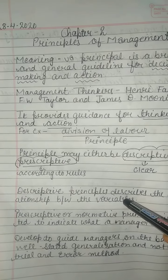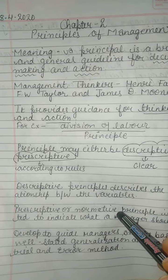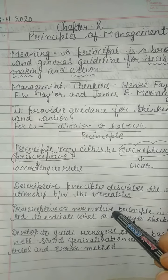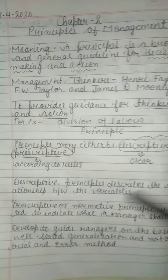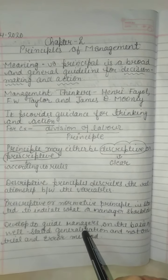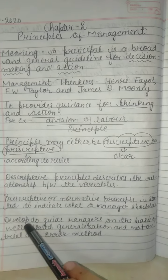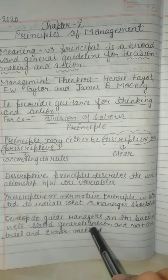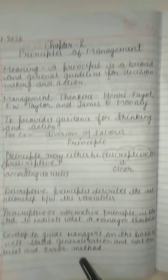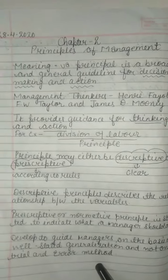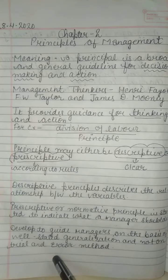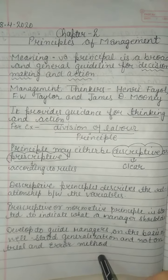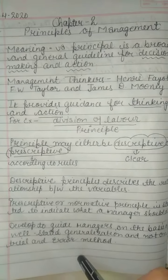Prescriptive or normative principles are developed to guide the manager in taking decisions on the basis of well-stated generalization, not on a trial and error method. Managers can estimate in advance what will happen in a situation. For the school fair example, the task is divided into smaller tasks — one person for anchoring, one for cultural events, one for the food court.